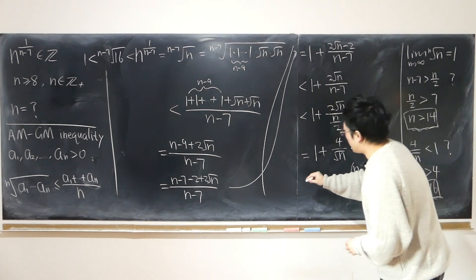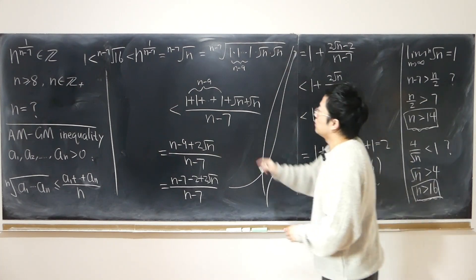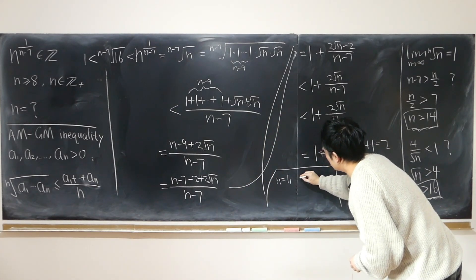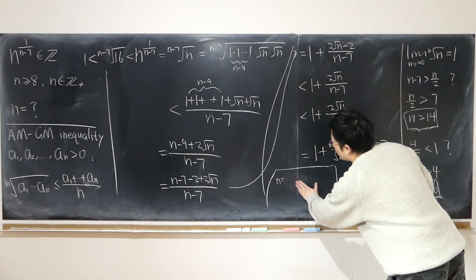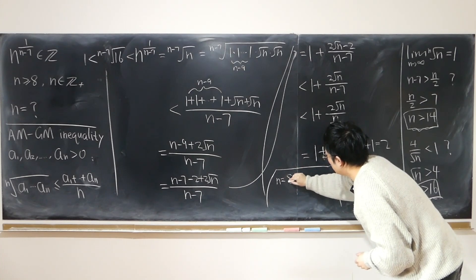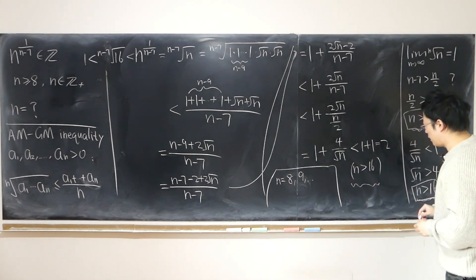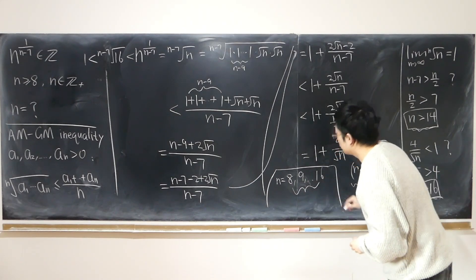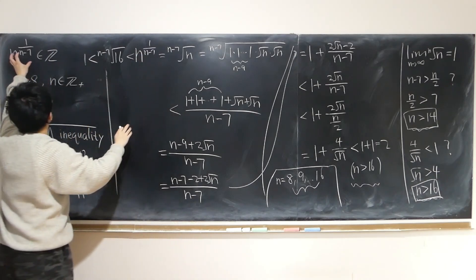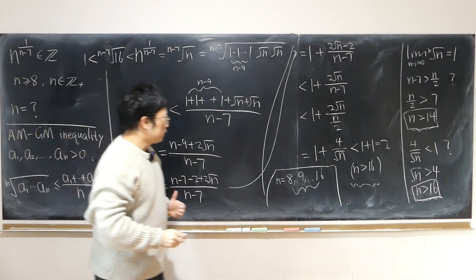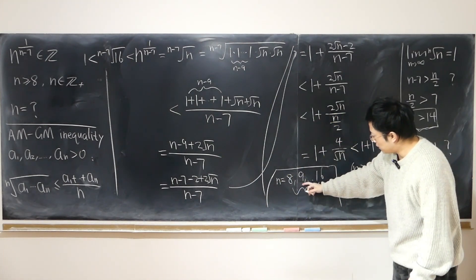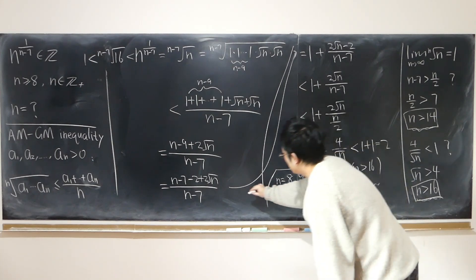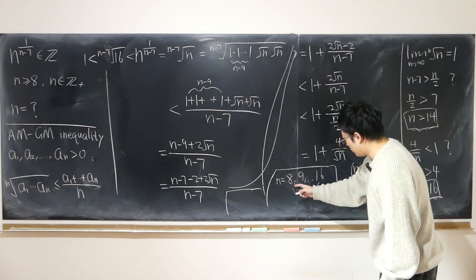So when n is bigger than 16, the expression cannot be an integer, because it's strictly larger than 1 and strictly less than 2. Therefore the only time it could be an integer is when n is in {8, 9, 10, 11, ..., 16}. We require n to be greater than or equal to 8, so we test out 8, 9, 10, 11, up to 16. There are finitely many numbers — easy to test. It turns out the only possibilities are n equals 8 and n equals 9.